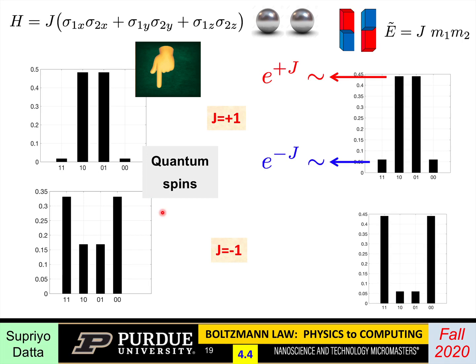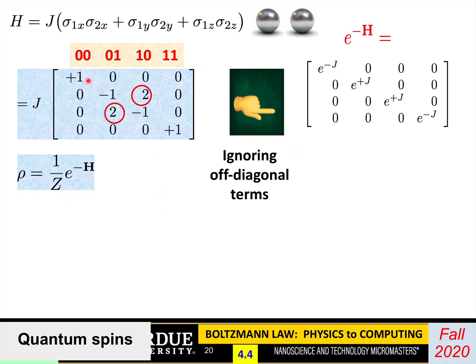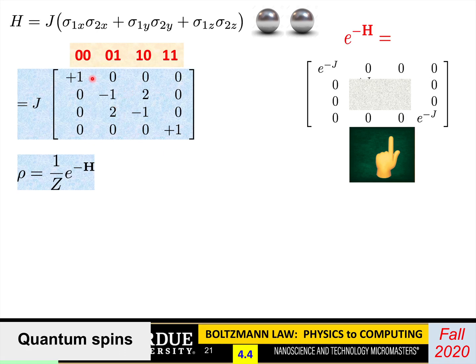Now, why is this difference? You can work this out analytically. If you ignored the off-diagonal terms, exponential of minus H would have looked like just exponential of minus J, plus J, plus J, and minus J along the diagonal. When you include the off-diagonal terms, the point to note is that as far as the two extreme ones are concerned, which correspond to the 0,0 and 1,1, they are still basically diagonal. The whole matrix is kind of block diagonal, with the first and the fourth one being one block and the second and third one being another block.